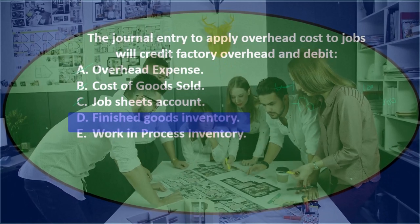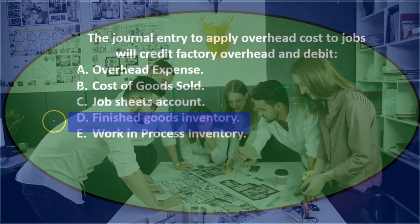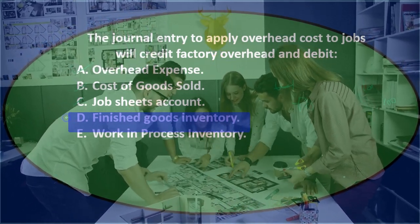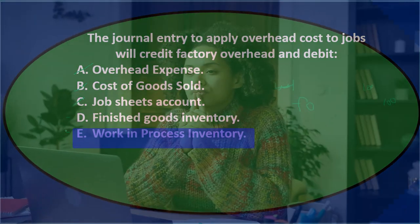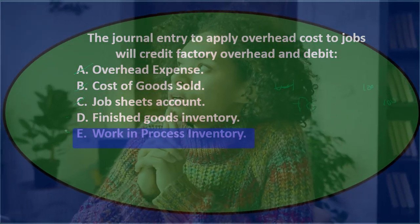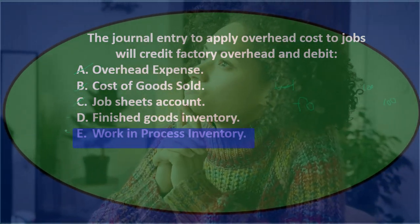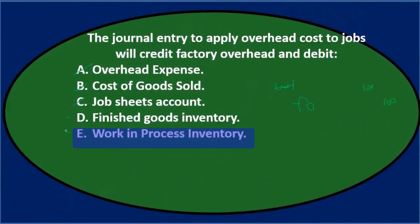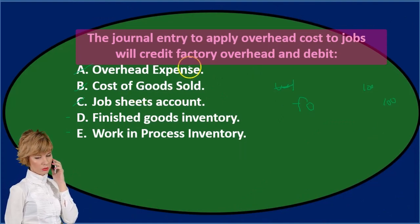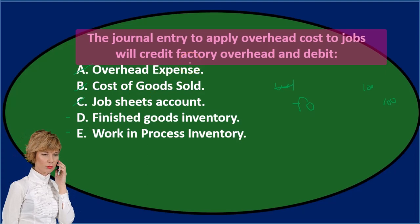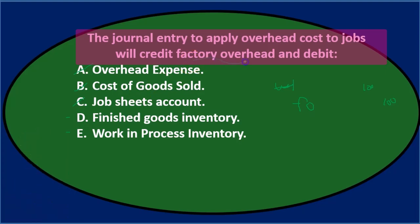D says finished goods inventory — that sounds kind of reasonable, so I'll keep that for now. And E says work in process inventory — that also sounds reasonable. Those are two inventory formats, which is where the overhead would go. So we're really thinking the overhead goes out of one kind of inventory account and into another.